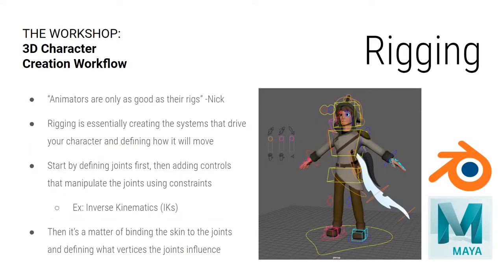Next is rigging — this is a rabbit hole, but we'll go into it anyway. Animators are only as good as their rigs. Rigging is essentially creating systems that drive your character and define how it will move — it's almost like giving it a skeletal system. You have this form and shape, and it needs to know how it's going to move. You have to tell it.